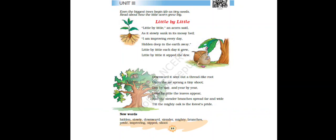So students, we have learnt up to this much in the last class. Today we are going to see what the acorn is doing further. How far has the acorn grown? Are we ready to find out? Then let's get started. Read the stanza with me: Downward it sent out a thread-like root. Up in the air sprang a tiny shoot. Day by day and year by year, little by little the leaves appear. And the slender branches spread far and wide, till the mighty oak is the forest's pride.